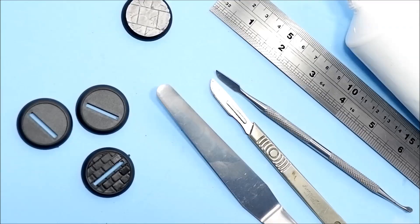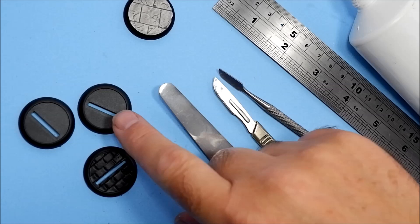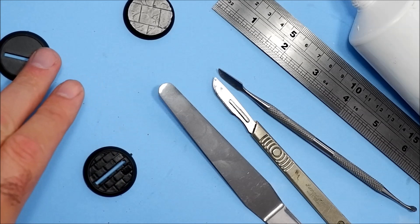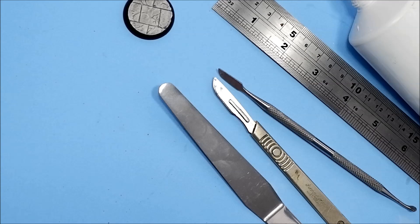Some of the things you're going to need are bases. I bought these from eBay, they're just 30 millimeter lipped round bases and they're really cheap to get hold of. But as I said, we're going to fill in one of these as well.